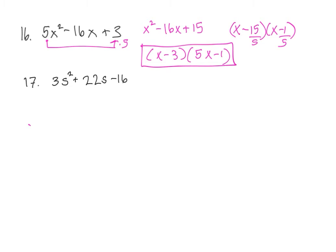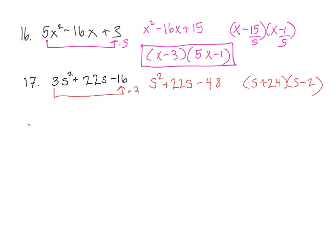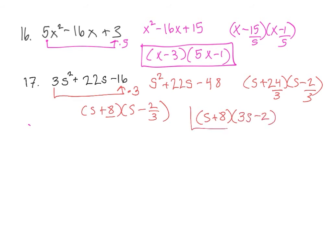Problem 17: we get x squared plus 22s minus 16. Let's take that 3 and multiply the 16. We end up with s squared plus 22s, and then 16 times 3 will be 48. So we need to find the factors of 48 that have a difference of 22, so that would be 24 and 2. So s plus 24, s minus 2. Because I multiplied by 3, at the end I have to go back and divide by 3 and reduce those fractions. So 24 over 3 is 8. Any fractions that don't get reduced, just bring them on up.